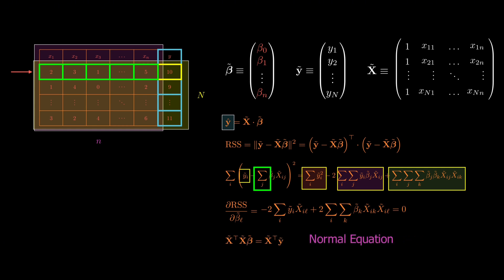It says that the transpose of X-tilde times X-tilde multiplied by beta-tilde must equal the transpose of X-tilde times y-tilde. Solving this matrix equation gives us the final formula. Beta-tilde equals the inverse of X-tilde transpose times X-tilde, multiplied by X-tilde transpose times y-tilde. And here is what we were after. This expression provides the optimal linear regression parameters in terms of the dataset values.